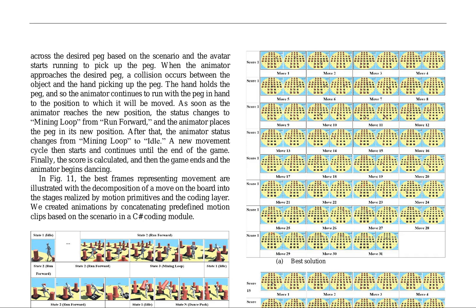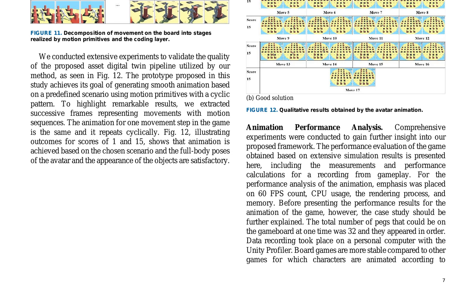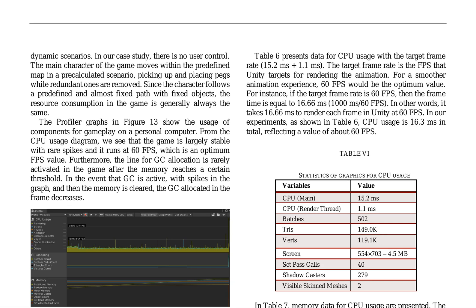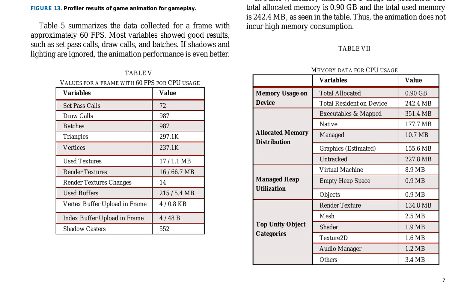The research paper presents the decomposition of movement into stages realized by motion primitives and the coding layer, as illustrated in FIG. 11. The proposed framework achieves its goal of generating animations with a cyclic pattern, as shown in FIG. 12, highlighting satisfactory results for scores of 1 and 15. The performance analysis, presented in FIG. 13 and tables 5, 6, and 7, focuses on CPU usage, rendering process, memory, and frame rate, demonstrating stability and efficiency. The study emphasizes the stability of the game, with rare spikes in CPU usage, and the animation runs at 60 fps. The memory usage is also optimized, with a total used memory of 242.4 megabytes out of a total allocated memory of 0.90 gigabytes. The research showcases a successful digital twin asset pipeline for game animation, achieving smooth and efficient animation performance.